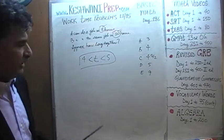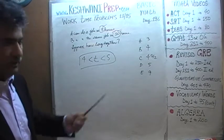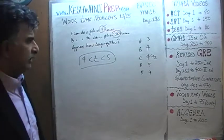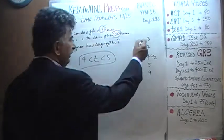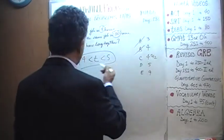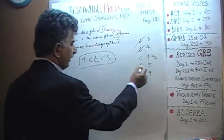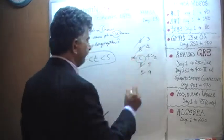Any answer that falls outside that range is not right. 3 is outside, 9 is outside, 4 is outside, 5 is outside. There you go — the answer is C (4.5).